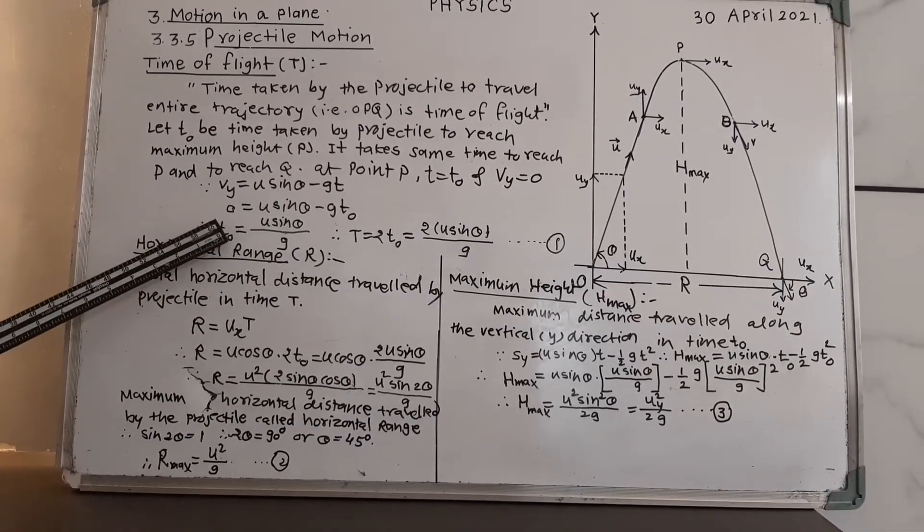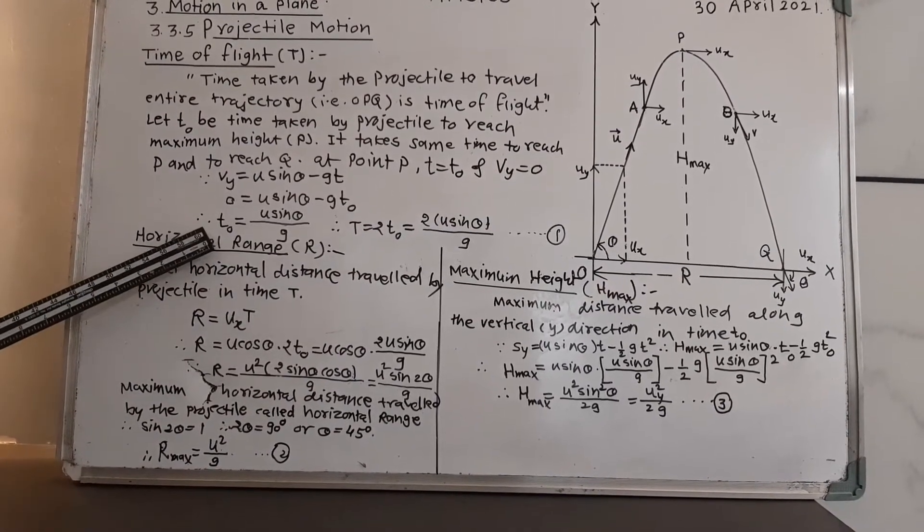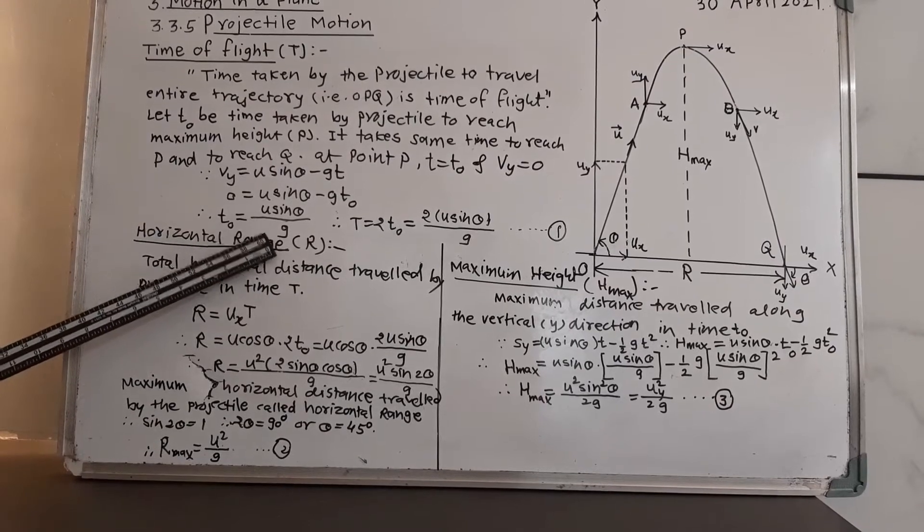This equation is used in the previous derivation also where we are substituting Vy to be 0 and T to be T0 and therefore, the equation will be 0 equal to U sin theta minus GT0. From this equation, T0 will be U sin theta upon G.